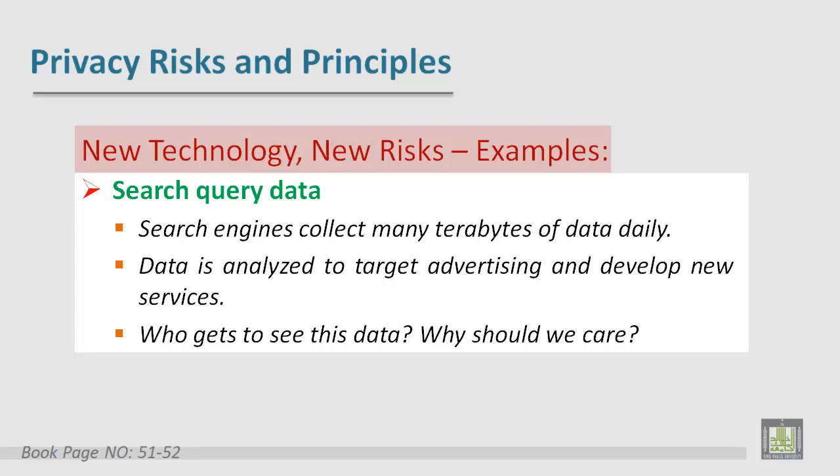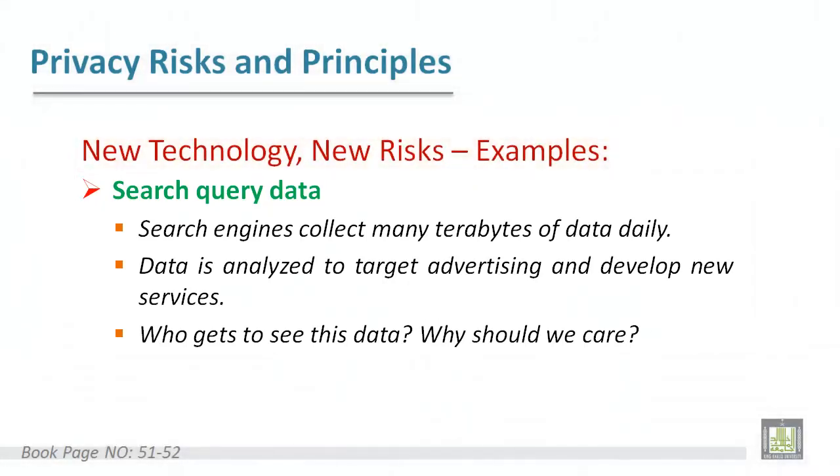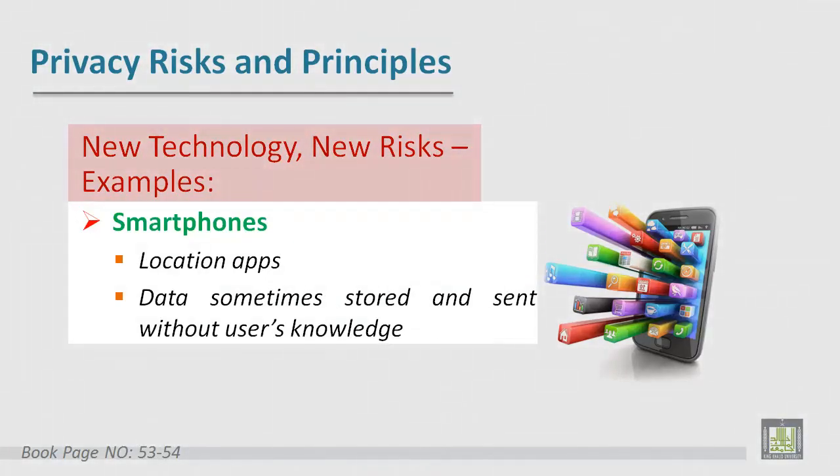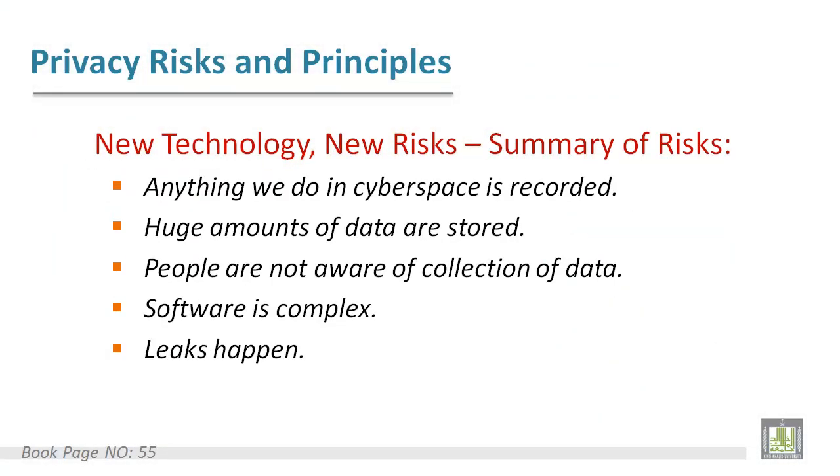This data could be used in data mining processes or in machine learning processes to get hidden patterns or hidden knowledge behind data. Another example is smartphones — there are many mobile applications that require personal information like location. Some applications like mobile banking ask for private information about customers, and the data is sometimes stored and sent without the user's knowledge.